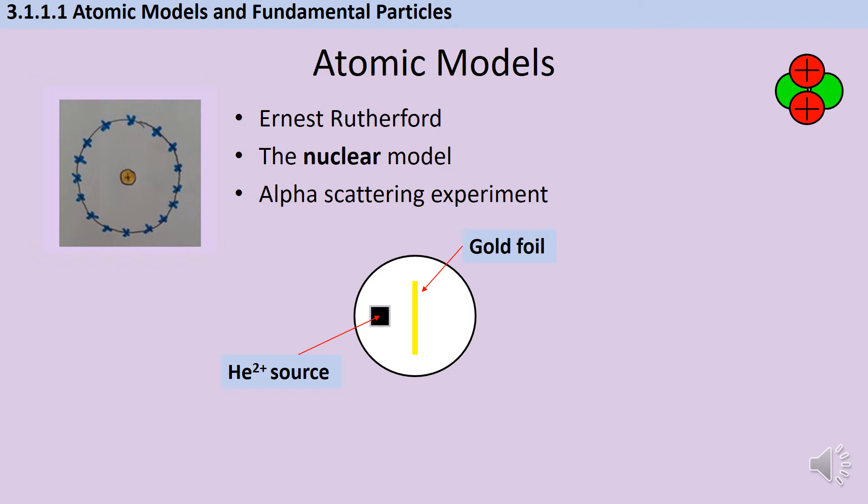Rutherford developed his nuclear model following an experiment that he did with his students Geiger and Marston called the alpha scattering experiment. They took a source of alpha particles, which are two protons and two neutrons, so exactly the same thing as a helium nucleus. And they fired those alpha particles at a very thin piece of gold leaf or gold foil. And they would have expected, if the plum pudding model had been accurate, that these would have all behaved in a fairly uniform way, because the plum pudding model was fairly uniform. And this would have meant that either they were all deflected straight back, or that they all went straight through. And actually, based on observations that had already been made, that was really what they were expecting.